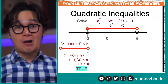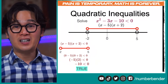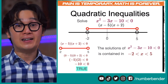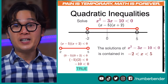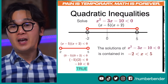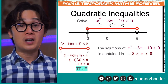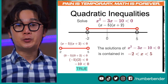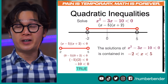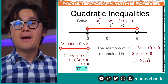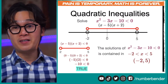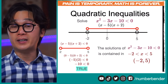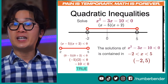The solution is true only between negative 2 and 5. We can write it in inequality notation: negative 2 less than x less than 5. Or in set notation using parentheses — open parenthesis negative 2, 5 close parenthesis — because negative 2 and 5 are not included. This is how we solve a quadratic inequality using these methods.